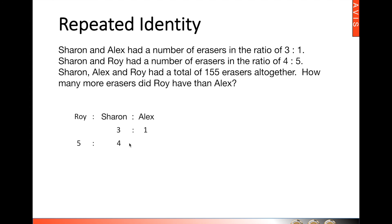Since Sharon is the repeated identity, we have to make Sharon the same number of units. As such we get the final ratio: Roy to have 15, Sharon to have 12, and Alex to have 4.